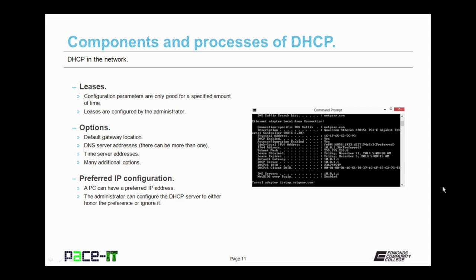There are also options that the administrator can configure. The first is the default gateway location. There's also the DNS server address, and the administrator can configure more than one DNS server location. An administrator can also configure an option for the PC to synchronize with a time server. There are many more additional options, but those are the big three you should remember.